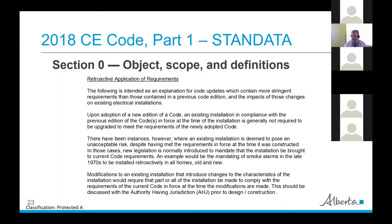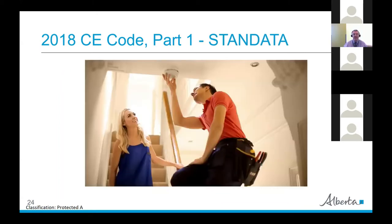There's a nice piece on that with an example of an electrician working on a smoke alarm in what appears to be an older home. Modifications to an existing installation that introduce changes to the characteristics of the installation would require that part or all of it be made to comply with the requirements of the current code in force at the time the modifications are made. Those are the kinds of things SCOs have to deal with in the field.